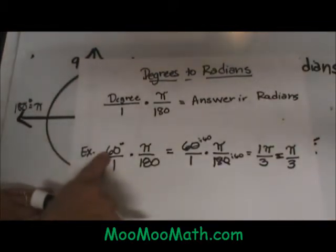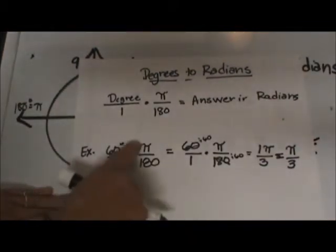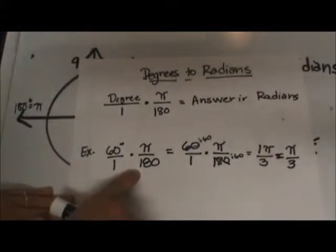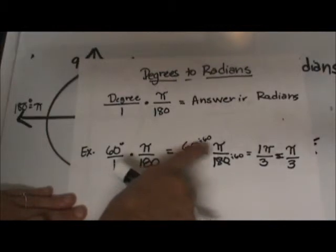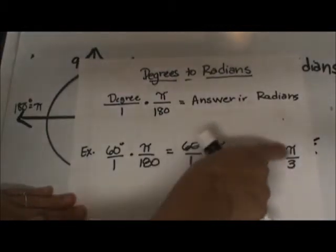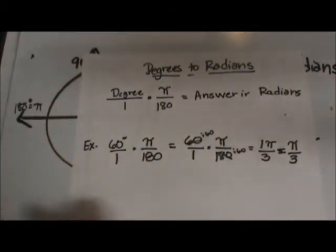Here is an example. 60 degrees over one times pi over 180. We just reduce these by 60. We are left with 1 over 3 or pi thirds. I hope this video was helpful.